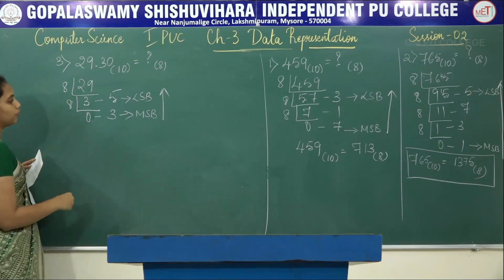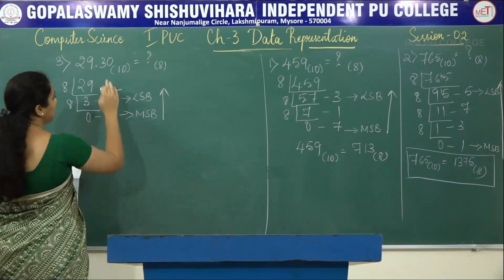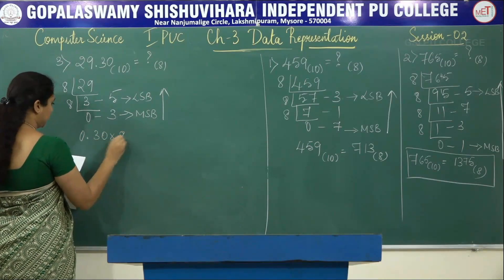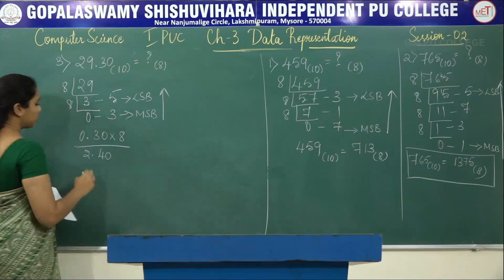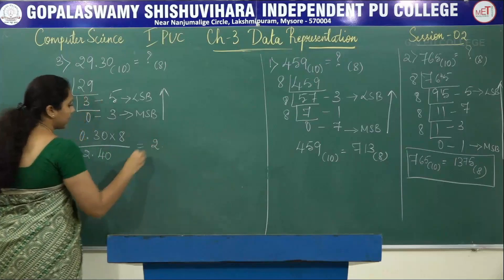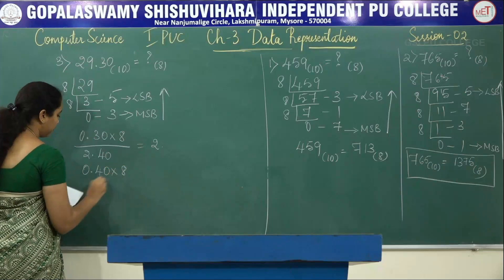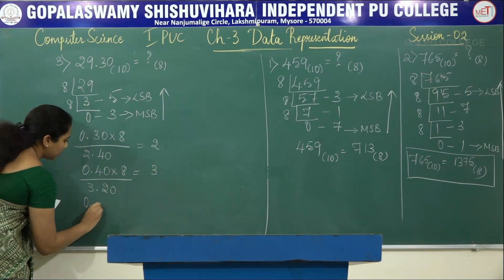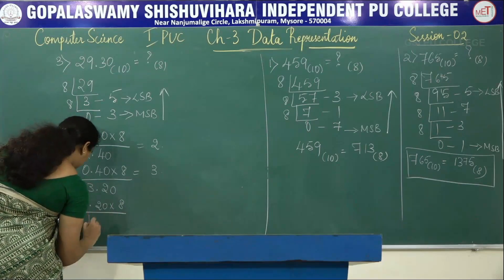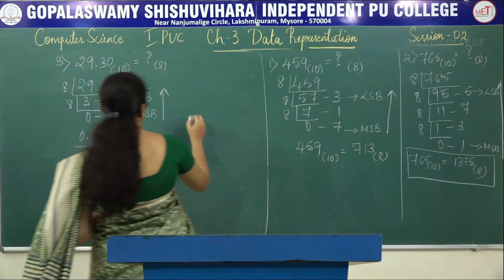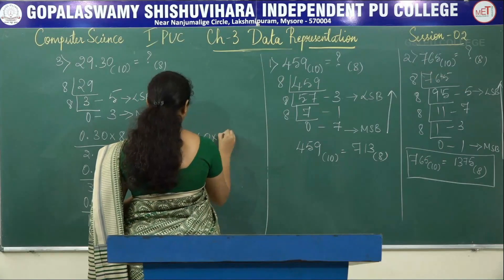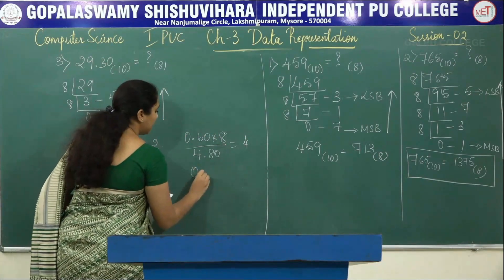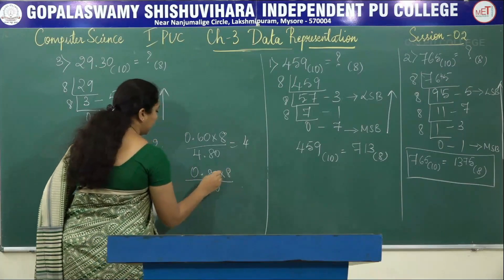The integer part of 29 converts to 35 in octal. Next, multiply the fractional part by 8: 0.30 × 8 = 2.40, take integer 2. Then 0.40 × 8 = 3.20, take integer 3. Then 0.20 × 8 = 1.60, take integer 1. Then 0.60 × 8 = 4.80, take integer 4.